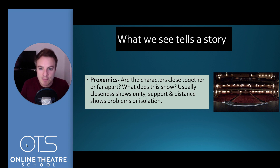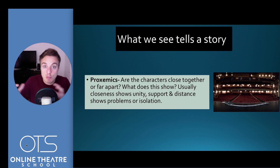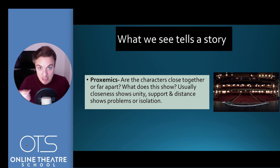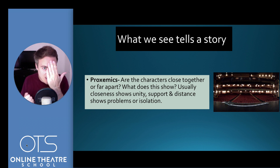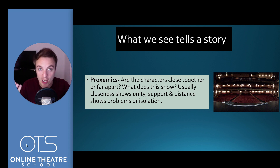You may have heard this phrase before: show, don't tell. So proxemics — characters close together usually shows an element of unity or support, and further away shows problems or isolation. That's not necessarily always true. For example, if you're doing a scene where someone's being bullied, they might be really close up, intensely looking at each other's faces. By using space and distance between two characters, you can find shortcuts into giving information to the audience.